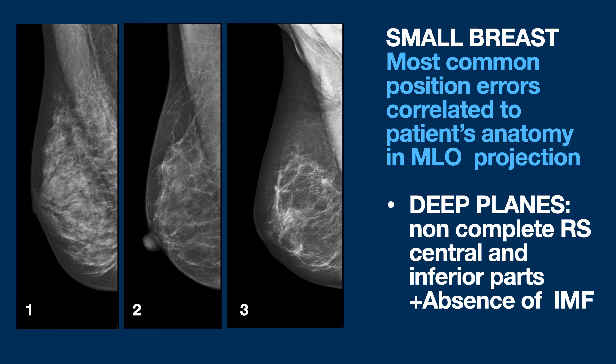The first error I would address is the difficulty in showing the deep planes — in this case we are undoubtedly talking about the central and lower tissue, as you can see here — to which is added the absence of the IMF.